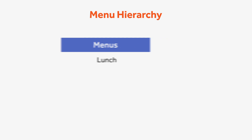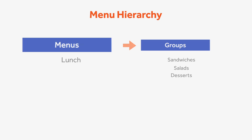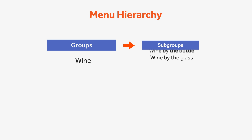Within menus, you can create groups such as sandwiches, salads, and desserts. To help break your groups down further, you can also create subgroups within groups, such as wine by the glass or wine by the bottle.